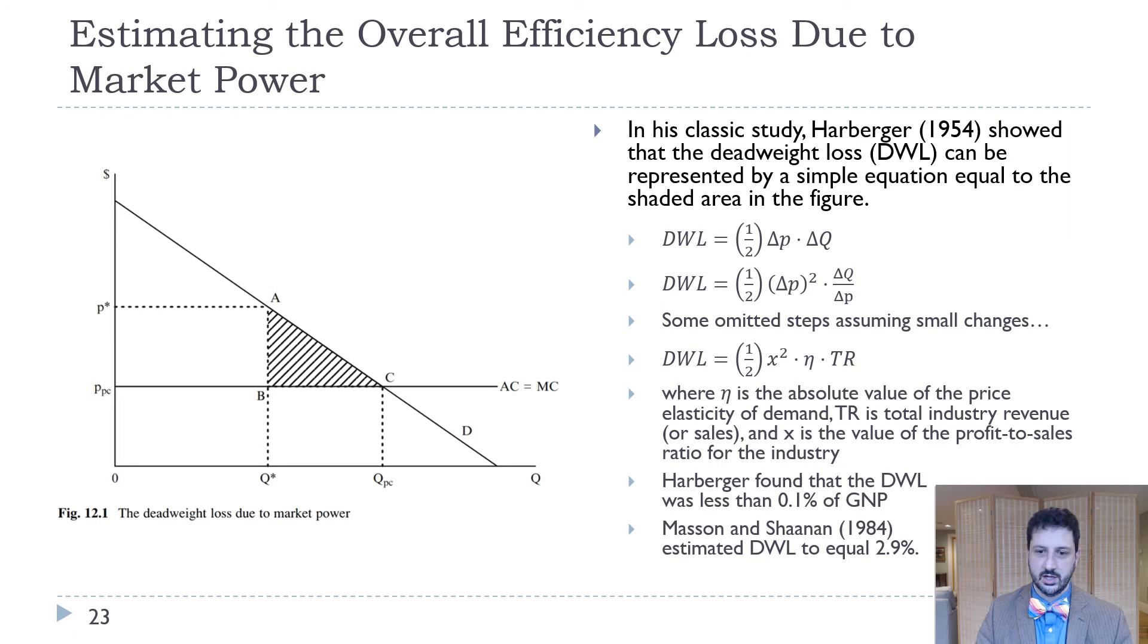Harberger who originally did this in 1954 found that deadweight loss was less than 0.1% of GNP. I think that was for the manufacturing industry. Mason and Shannon who did this a little bit later in 1984 estimated that it was equal to about 2.9%. So obviously that's a big difference in how much static inefficiency is costing the economy over time. 0.1%, we could say that's not a big deal. 3%, that's a much bigger deal. One of the points in the book was that this might've decreased recently due to globalization, which has increased competition overall.